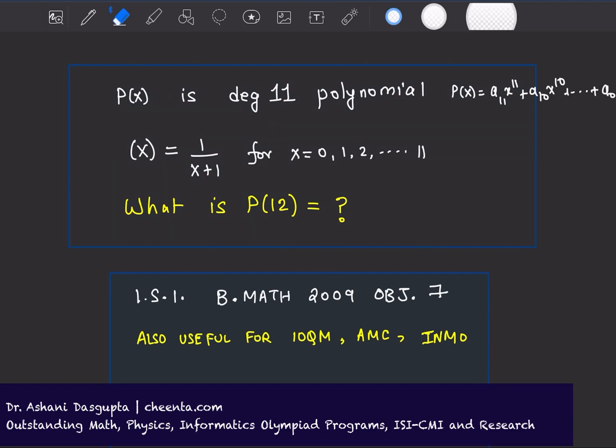P(x) is equal to 1 over x plus 1 for these values of x. Just to make sure we understand, P(x) does not look like this, but it looks like this only for these input values of x. We want to find out what is P(12).